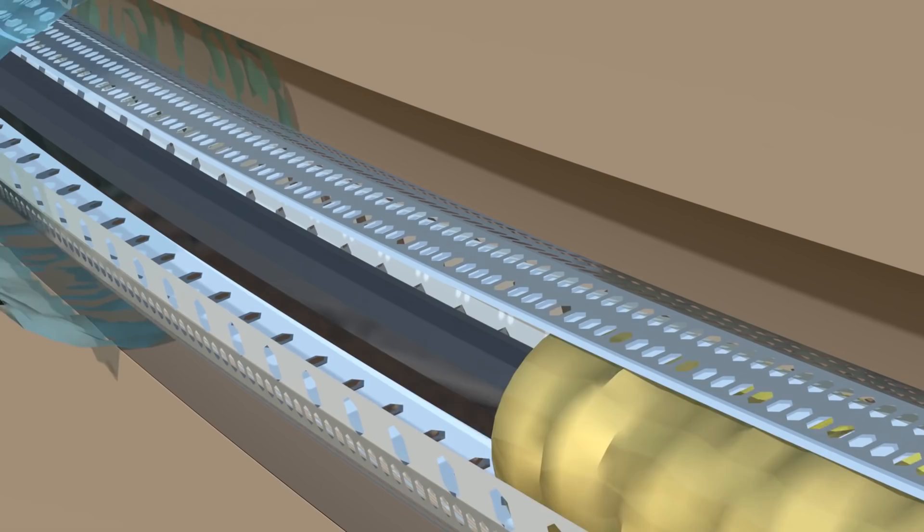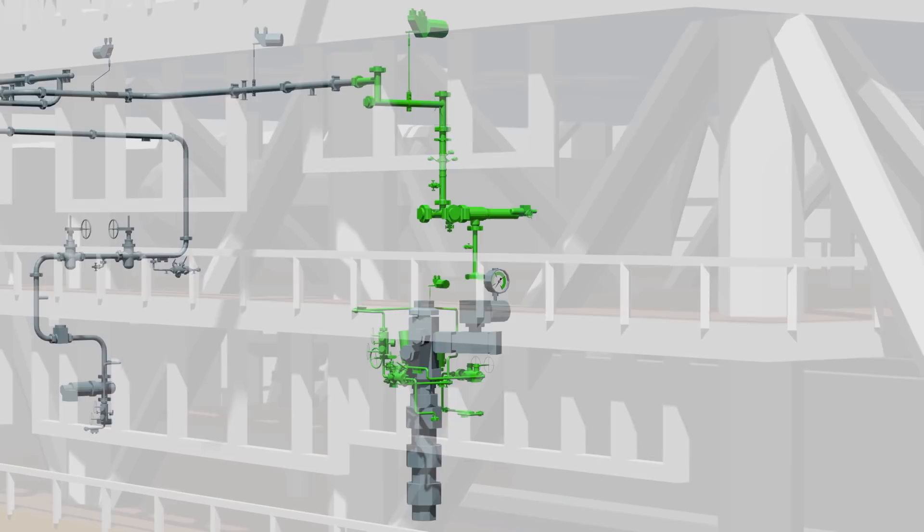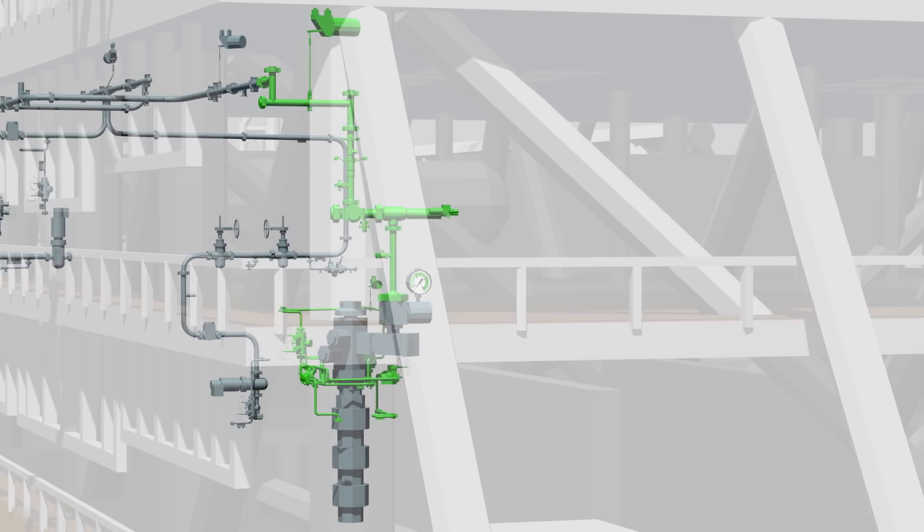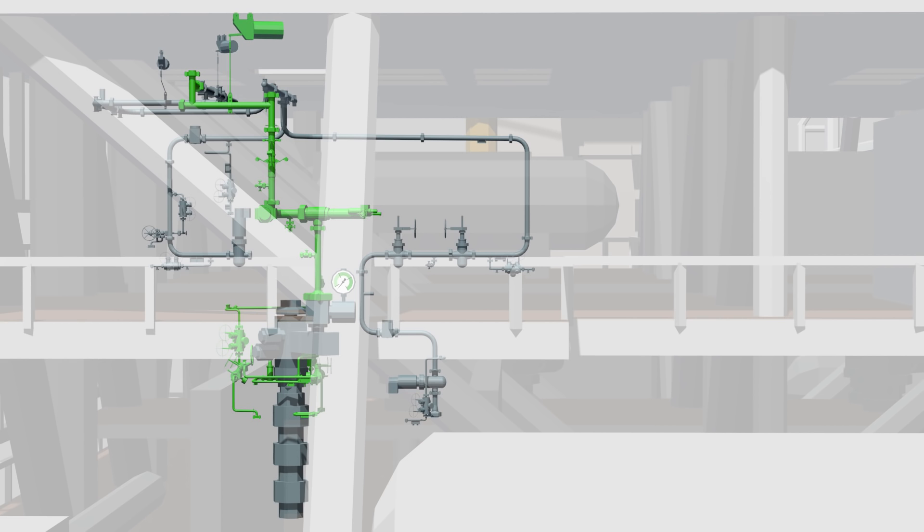With the well complete, we could install the Christmas tree and begin hookup and commissioning, using an innovative process called 3D SimUps, which allowed hookup and commissioning activities to progress simultaneously. This meant we completed ahead of schedule with zero unplanned delays. SimUps combined with the simplified flowline design led to a new UK hookup and commissioning record for a high-pressure, high-temperature well.